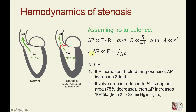To understand these changes, we need to look at the hemodynamics associated with stenosis. In this diagram, under control conditions we might have a pressure gradient of only 2 millimeters of mercury during ejection. But in this stenotic condition, the pressure gradient across the valve might become 32 millimeters of mercury instead of 2.